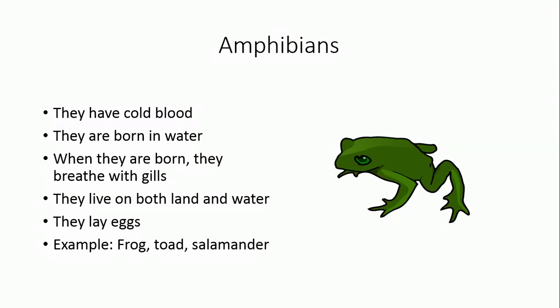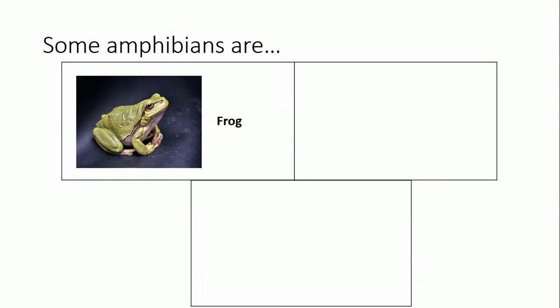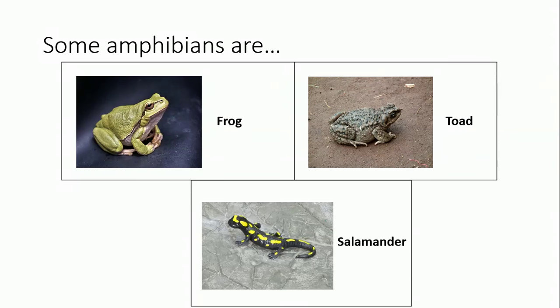Examples of amphibians include frog, toad, and salamander. Let's see how they look: frog, toad, salamander.